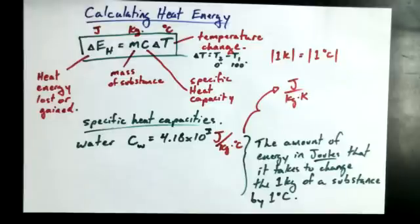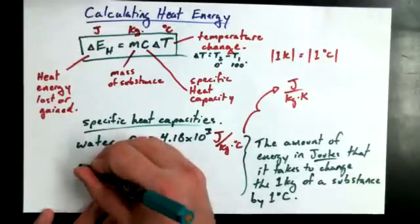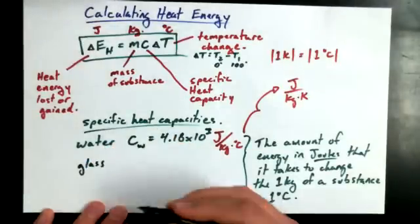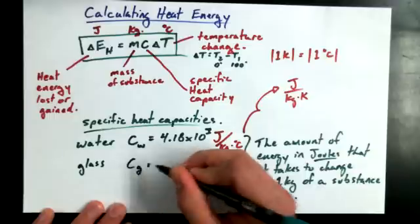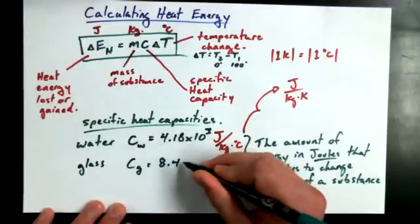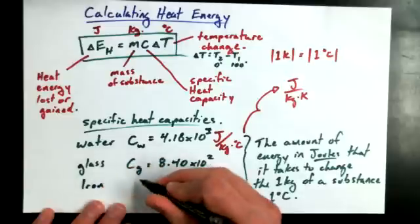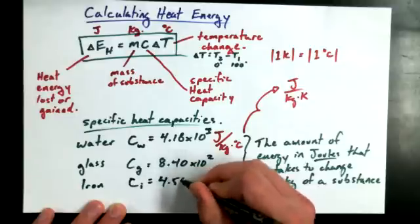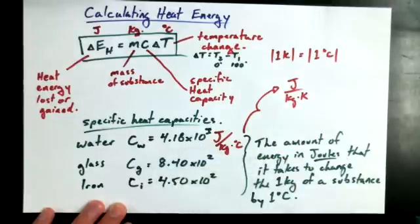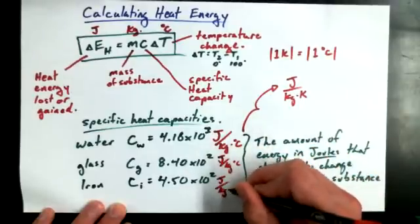Yeah? Well, maybe friction was the method. That's the way that the kinetic energy was transferred. But in the end, you're going to get thermal energy. Okay, so that's water. Let's give you a couple more useful ones. Glass. It's going to be 8.40 times 10 to the power of 2. And iron. 4.50 times 10 to the power of 2. And again, joules per kilogram degree Celsius. Joules per kilogram degree Celsius.